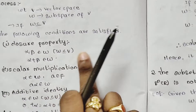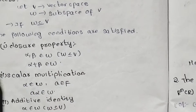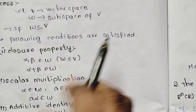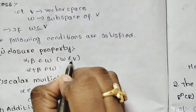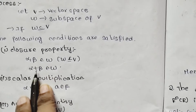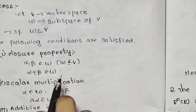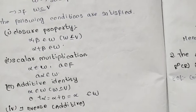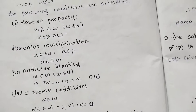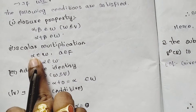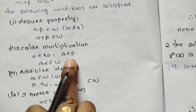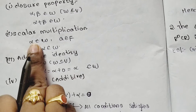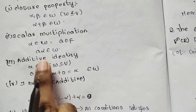For the closure property, alpha and beta should belong to omega, which is a subset of V. So we have to find alpha plus beta — it should belong to omega. For scalar multiplication, alpha is a vector belonging to omega, and A belongs to the field F.